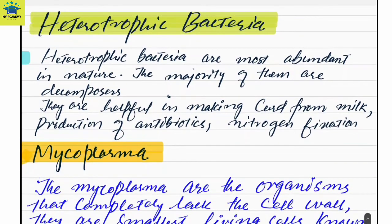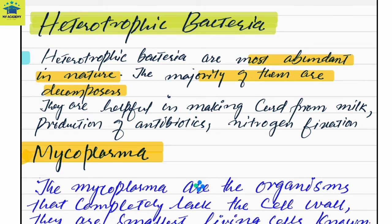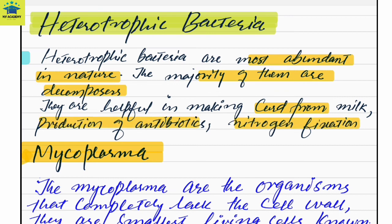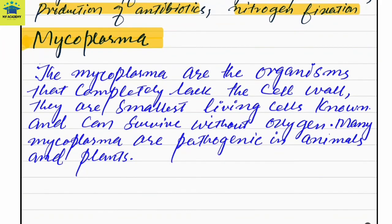Heterotrophic bacteria are dependent on other organisms. They are the most abundant in nature and are mainly decomposers — they decompose biodegradable substances. They are helpful in making curd, milk production, producing antibiotics, and also helping in nitrogen fixation.